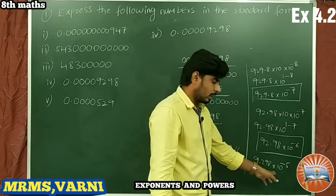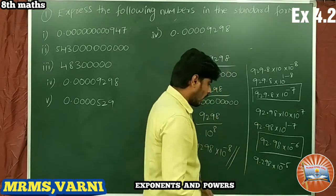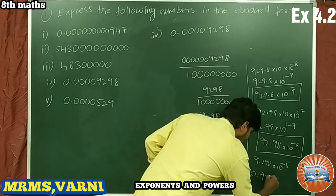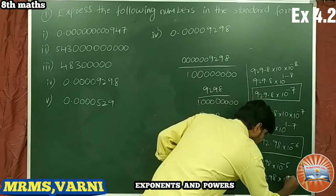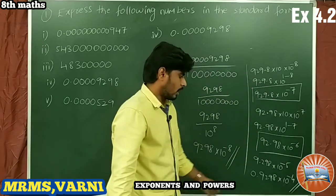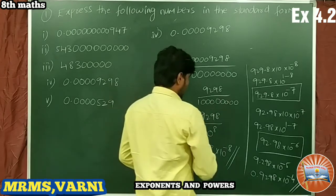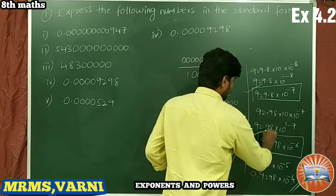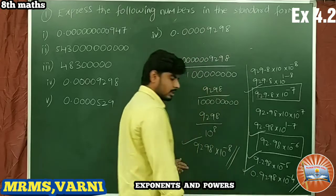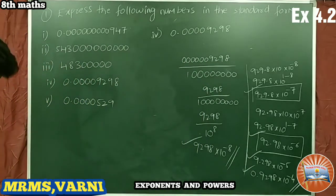Or we can write 0.9298 × 10^(−4). That gives us five different ways to express the same number. Next, problem number 5.